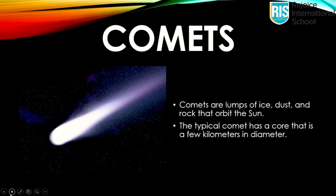Next we will learn about comets. Comets are lumps of ice, dust and rock that orbit the sun. The typical comet has a core that is a few kilometers in diameter. Comets are often called the dirty snowballs of the solar system. As a comet nears the sun, its ice will begin to heat up and turn into gases.